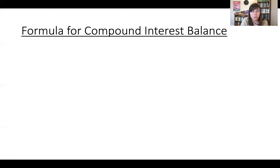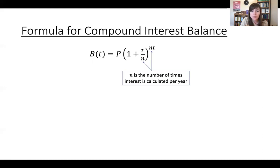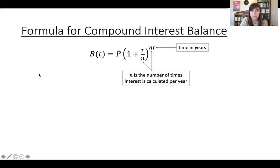So now let's look at the general compound interest balance formula. We take the principal and multiply it by one plus the annual rate divided by N — the number of times interest is calculated per year — and then raise that to the power of N times T, the number of years. So the formula is B = P(1 + r/n)^(nt). N is the number of times interest is calculated per year; R, P, and T are the same as in previous formulas. Time T is in years.